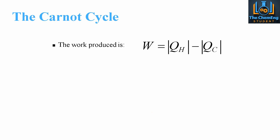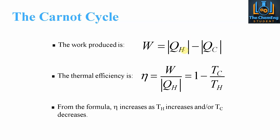The work produced can be expressed as the magnitude of QH minus QC. The magnitude here means we take the positive value of each quantity, as it is simply the difference between these values. The thermal efficiency is then given by the ratio of the work output divided by the amount of heat coming into the system.